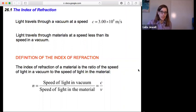The interesting thing is that light will travel through materials at a speed less than its speed in a vacuum. So once you have something other than a vacuum or even other than air, the light is going to travel at a slower speed.